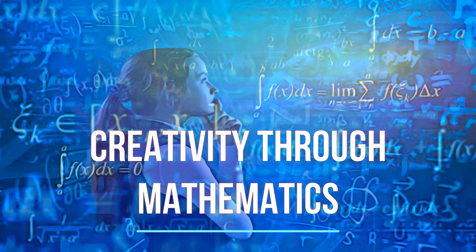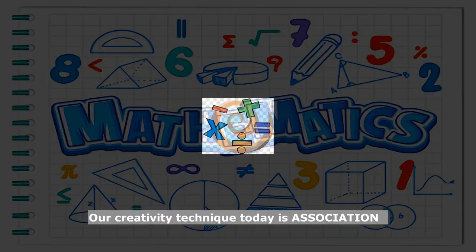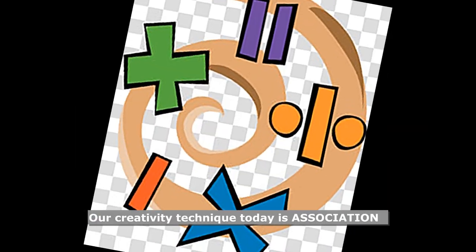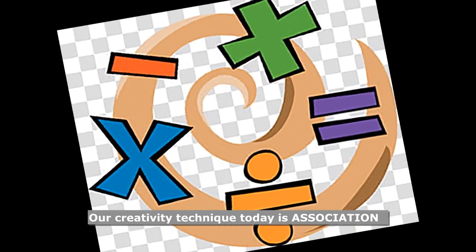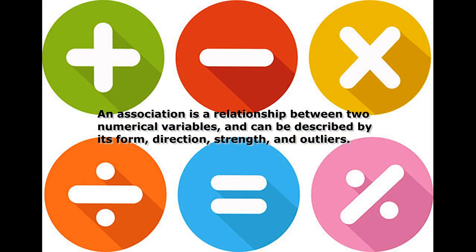Creativity Through Mathematics. Our creativity technique today is Association. An association is a relationship between two numerical variables, and can be described by its form, direction, strength, and outliers.